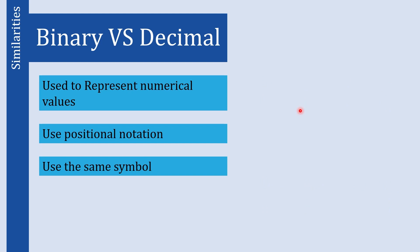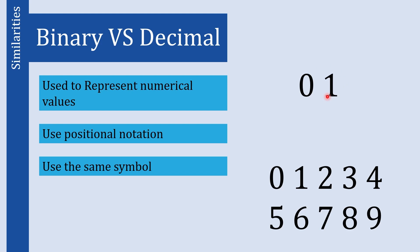The next similarity is that both systems use the same symbolic representation. Binary uses 0 and 1, whereas decimal uses 0 to 9. Both systems use symbols from 0 to 9, where binary uses only 0 and 1 and decimal uses 0 through 9.